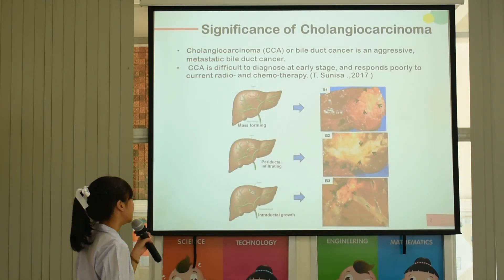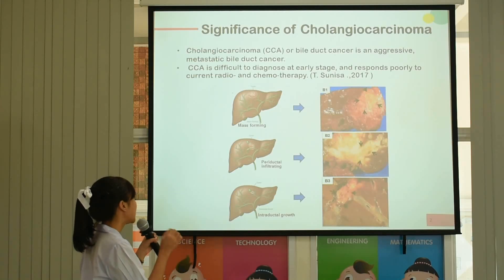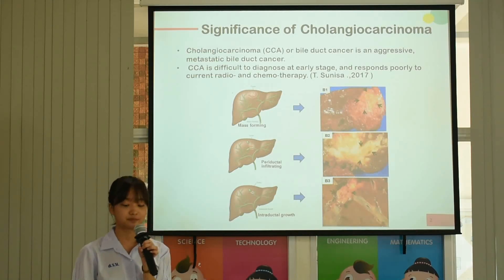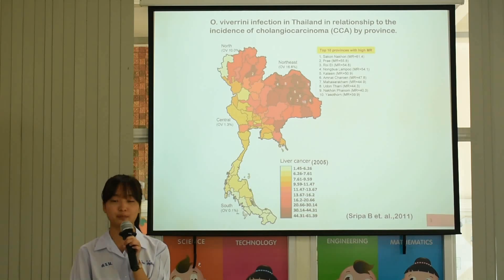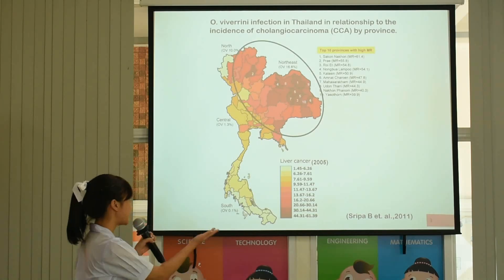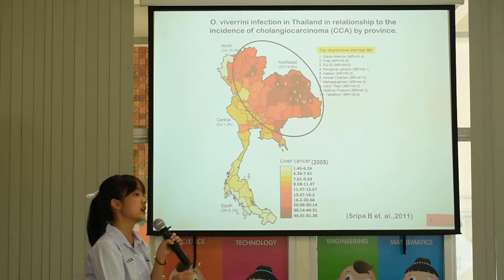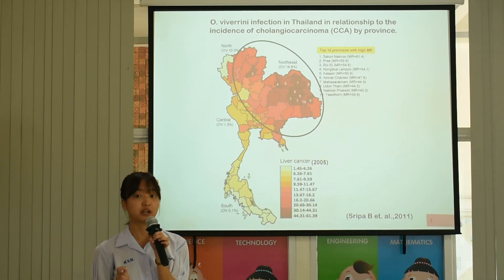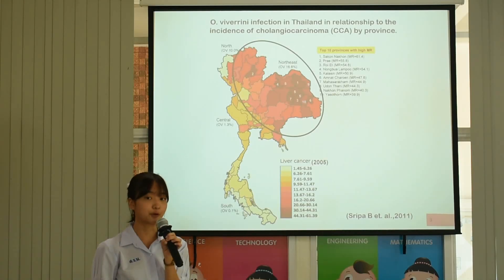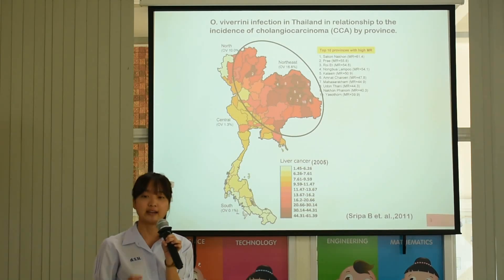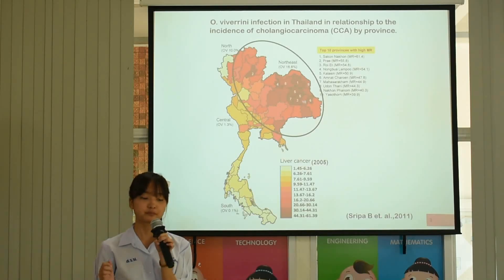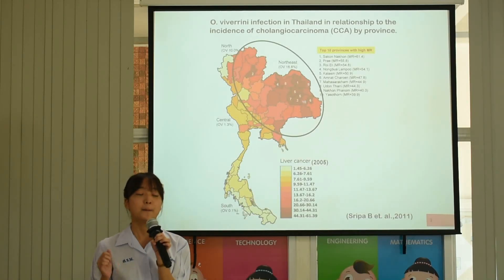Here are some representative pictures of CCA. CCA is identified as a major health problem, especially in the northeast of Thailand, because people in this area are infected with liver fluke. It is called Opisthorchis viverrini, or OV. This OV infection is proposed as a major risk factor for CCA development.